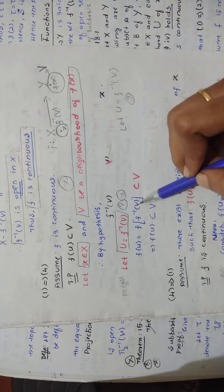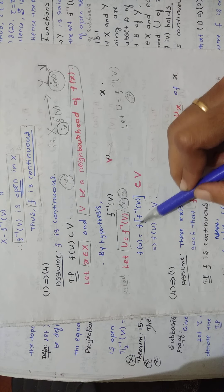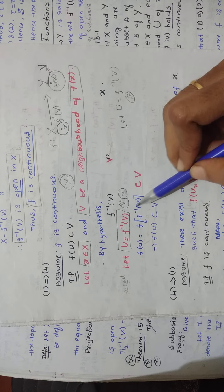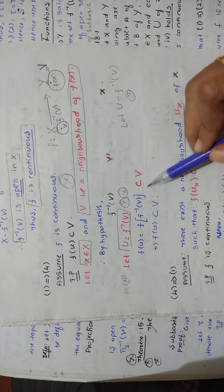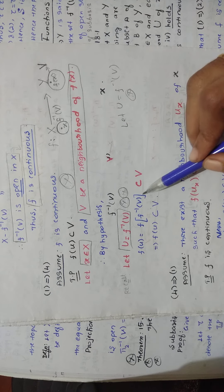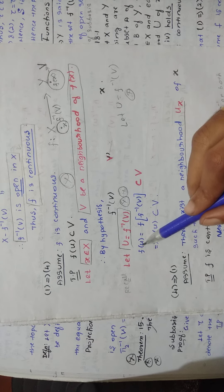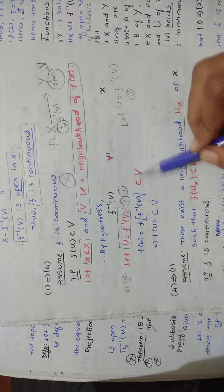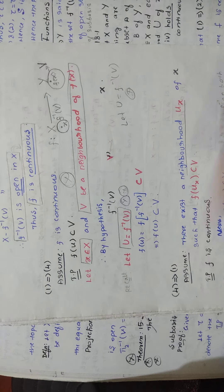Taking f on both sides of U = f-inverse of V, you get f(U) contained in V, since f composed with f-inverse cancels, leaving V. So you can write f(U) is contained in V. Combining these steps, f(U) ⊆ V is proved. Thus '1 implies 4' comes to an end.